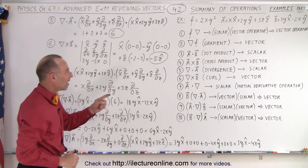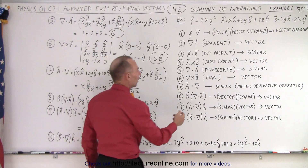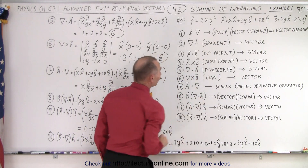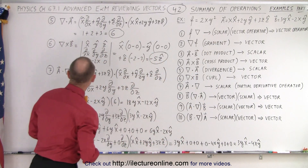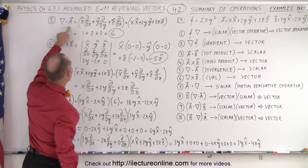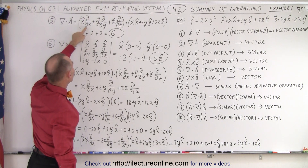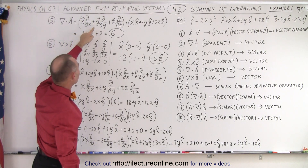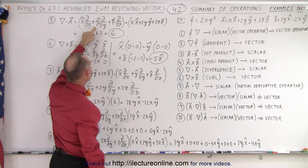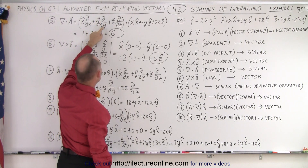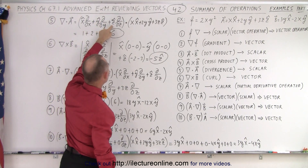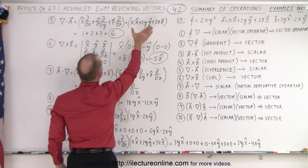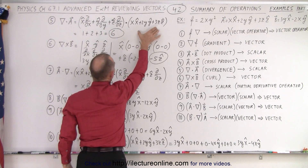Starting with number 5, we have the divergence of a vector — the divergence of A. A is defined over there, so when we come over here, the divergence of A is equal to the x unit vector times the partial derivative with respect to x, plus the y unit vector times the partial derivative with respect to y, plus the z unit vector times the partial derivative with respect to z, operated on the vector A.